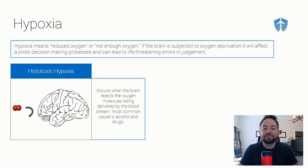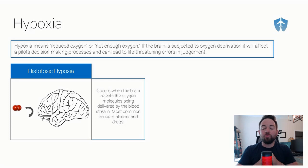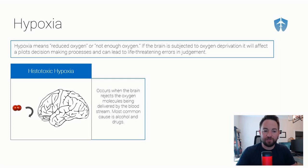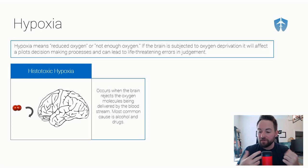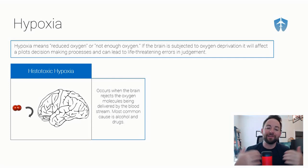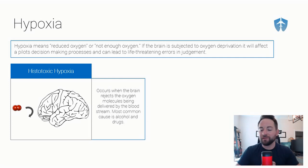The third one is histotoxic hypoxia. This occurs when the brain rejects the oxygen molecules that are being delivered to it by the bloodstream. You have plenty of oxygen around you, you're breathing it in, it's attaching to your blood cells just fine, being transported throughout your body just fine — but when it gets to your brain, the brain rejects it and blocks the blood cells from delivering oxygen to it. You can think of 'toxic' as a memory cue. The most common cause of histotoxic hypoxia is alcohol and drugs — that's why they call it 'getting high,' because it's essentially like hypoxia where your brain is not getting enough oxygen.